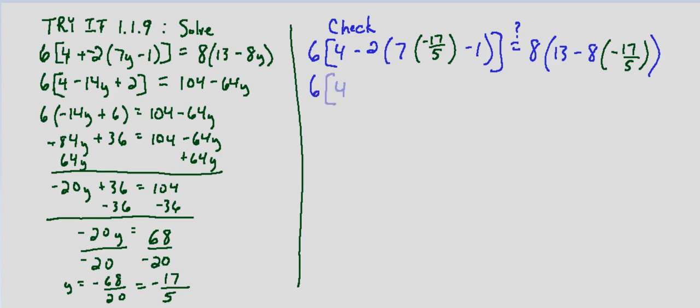So when we simplify this, we just multiply on this side we still have minus 2 times negative 17 fifths times 7. That's going to end up being negative 119 fifths, and again that's still minus 1. That's all being multiplied by the minus 2. And does that equal 8 times 13, and then we have minus 8 times negative 17 fifths. So this is going to end up being plus because a negative times a negative is a positive.